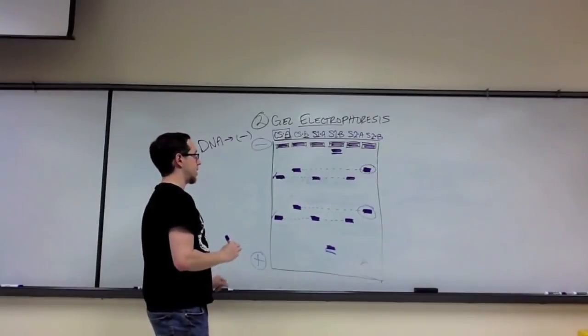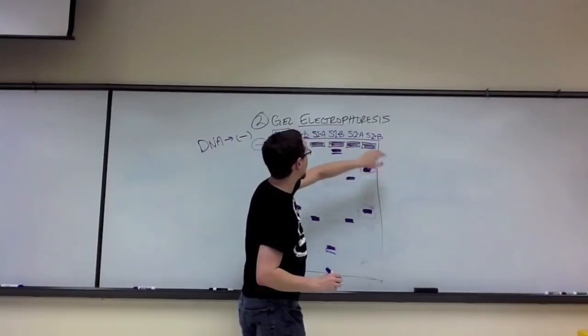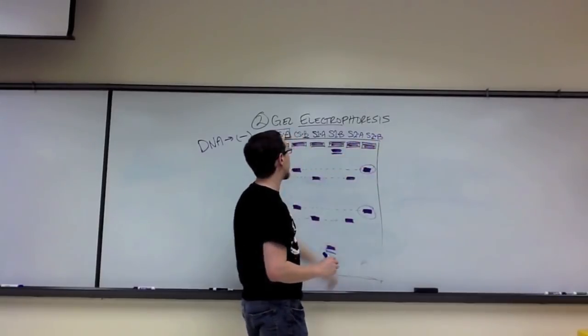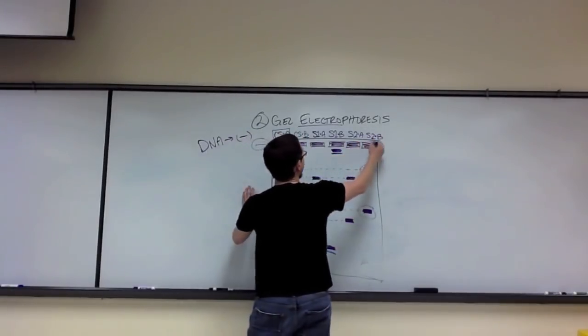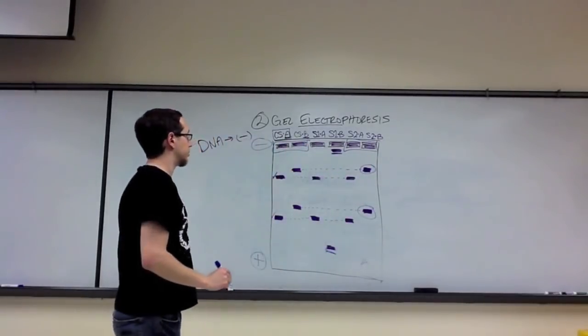In order for it to be the criminal who is at the scene of the crime, if you digest with two enzymes, both of those lanes have to match to both of your crime scene lanes for that person to be the guilty party.